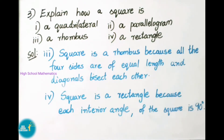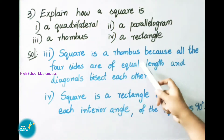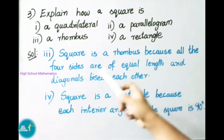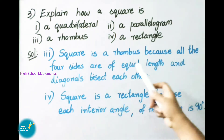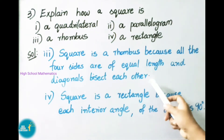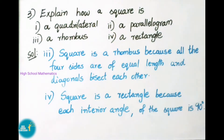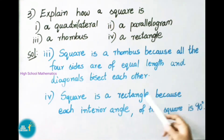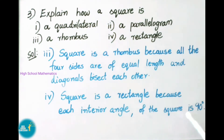Square is a rhombus because all 4 sides are of equal length and diagonals bisect each other. Square is a rectangle because each interior angle of the square is 90 degrees.